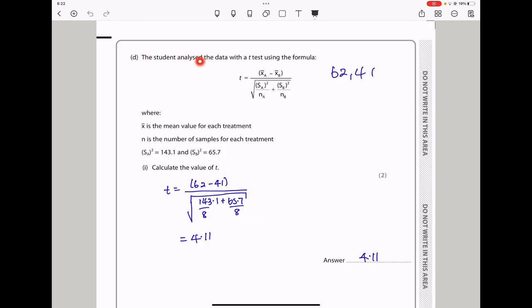Next they say the student analyzed the data with a t-test using the formula, which is this one here, where this is going to be the mean of each value, and n is the number of samples, which was of course 8. To get the t-value, I had to substitute here. If I take the mean of A to be 62 and the mean of B to be 41, this means I'm going to substitute, and then this is going to be that divided by 8 plus that divided by 8, and using my calculator I got 4.11.